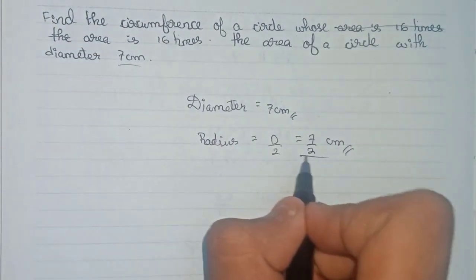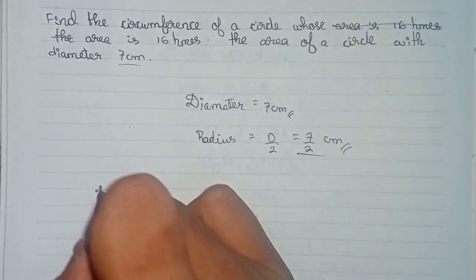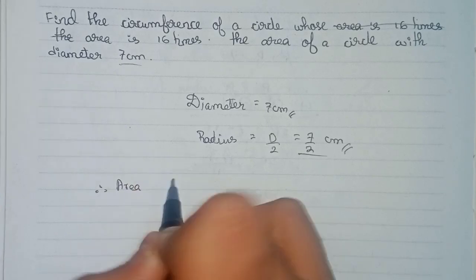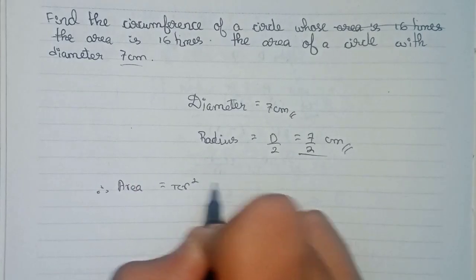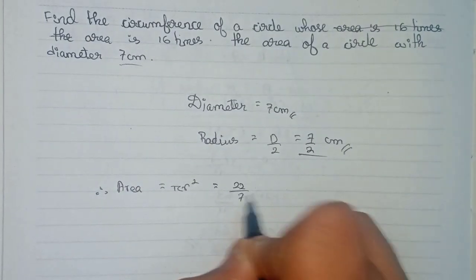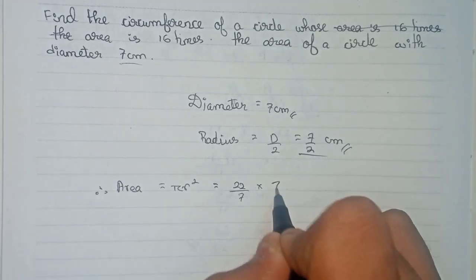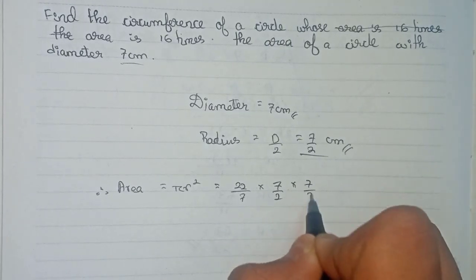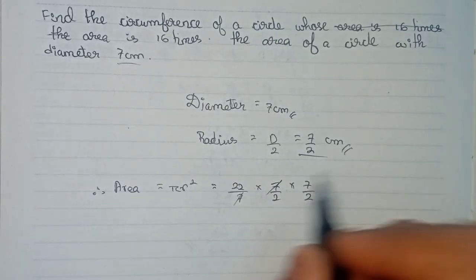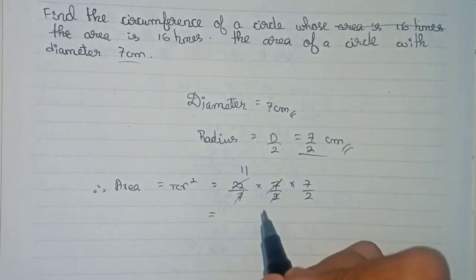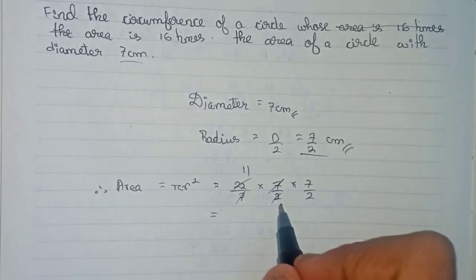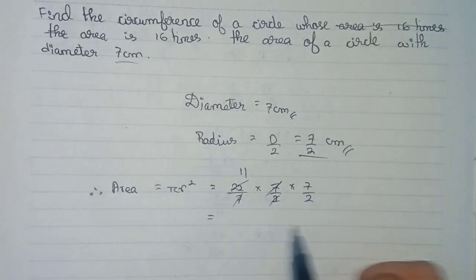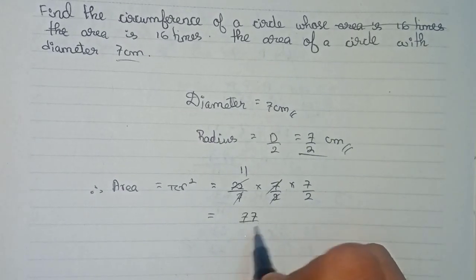Now we'll find out the area of this circle with radius 7 by 2 centimeter. So pi r square: 22 by 7 into 7 by 2 into 7 by 2. You cut 7 and 7, 2 and 11, so it becomes 77 by 2 centimeter square.